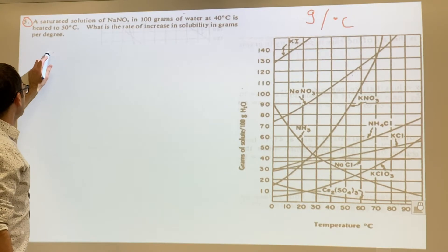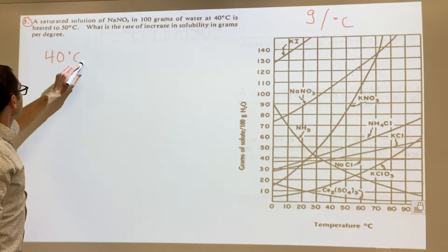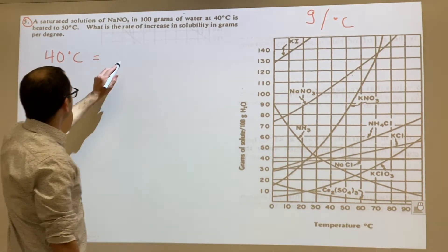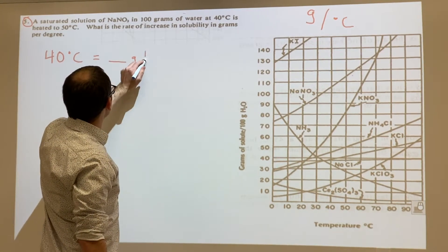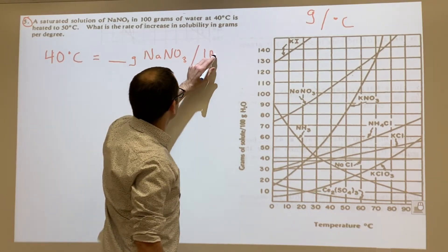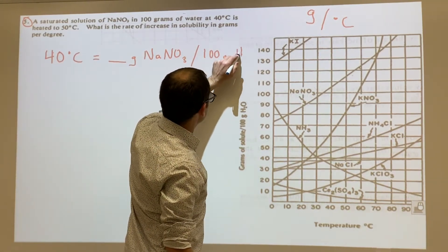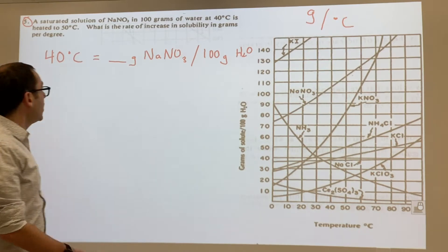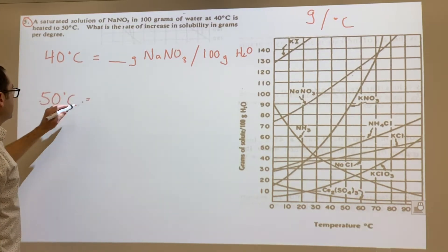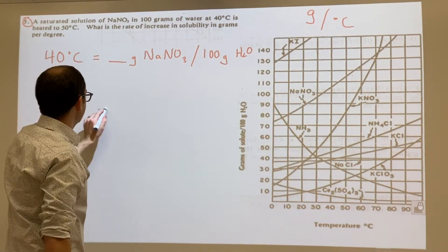I'm gonna start with the first one: 40 degrees Celsius equals blank grams NaNO3 per 100 grams of H2O. The next one's gonna be the same thing but at 50 degrees. So now the only difference with our setup are the temperatures.